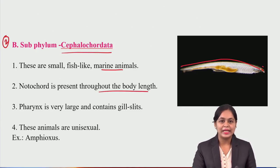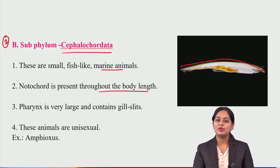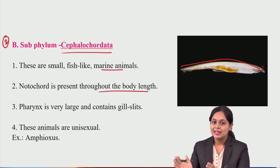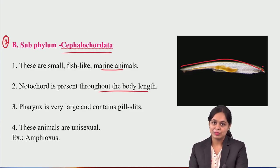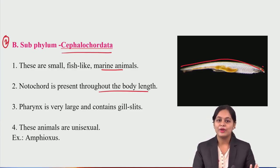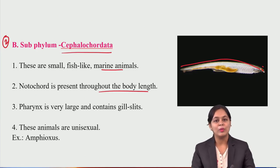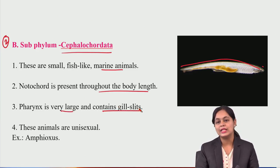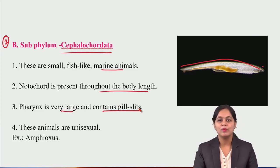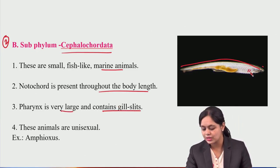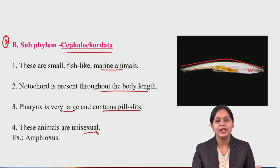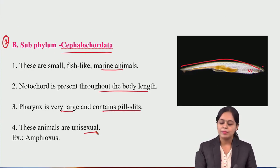In Cephalochordata, you will see the notochord throughout the whole body length — unlike Hemichordata where it is partial, and Urochordata where it is only in the tail region. The pharynx is very large and contains gill slits. These animals are unisexual — males and females are separate. The example is Amphioxus.